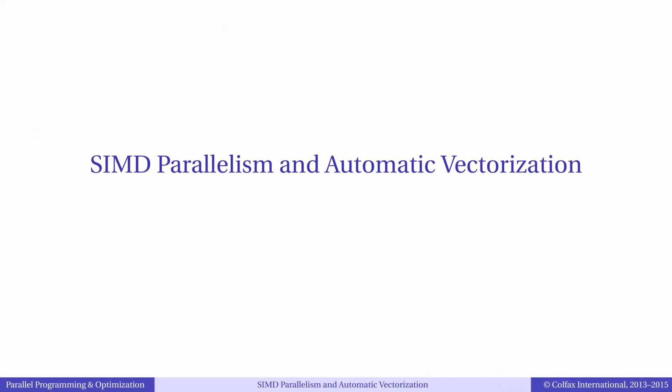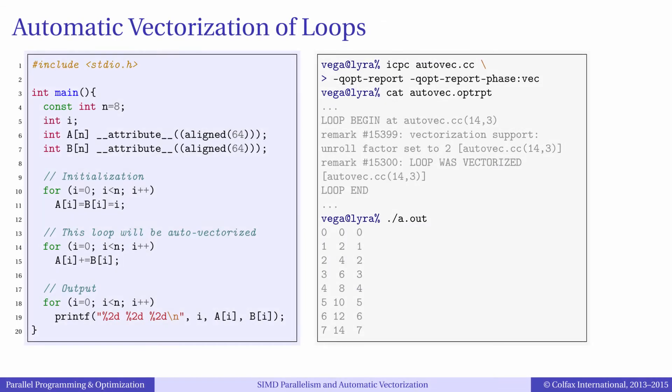In order to achieve vectorization and portability with less effort, we can rely on automatic vectorization in the compiler. As the name suggests, automatic vectorization may occur without any action on the programmer's part. In simple applications, this is indeed correct. However, we will learn in this course how to assist the compiler in implementing optimal code paths.